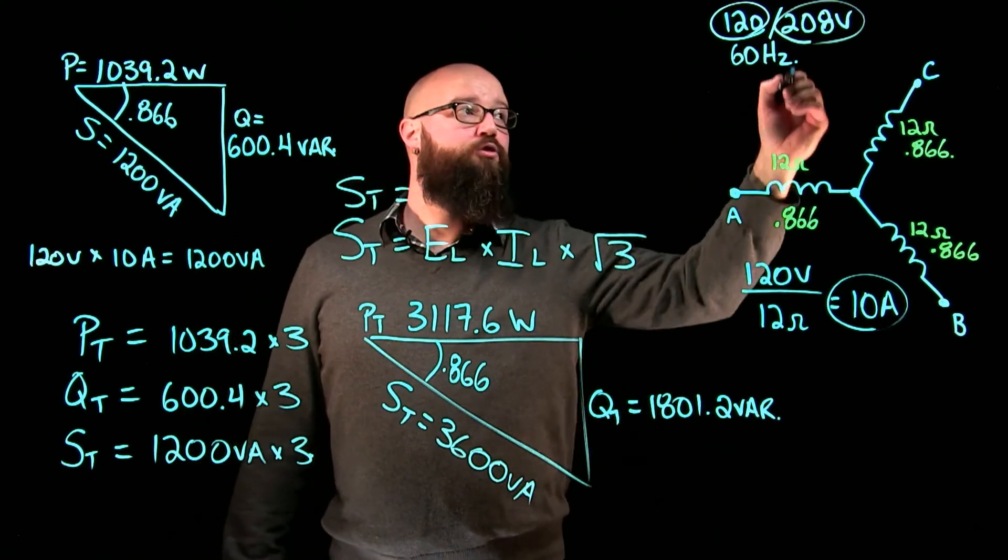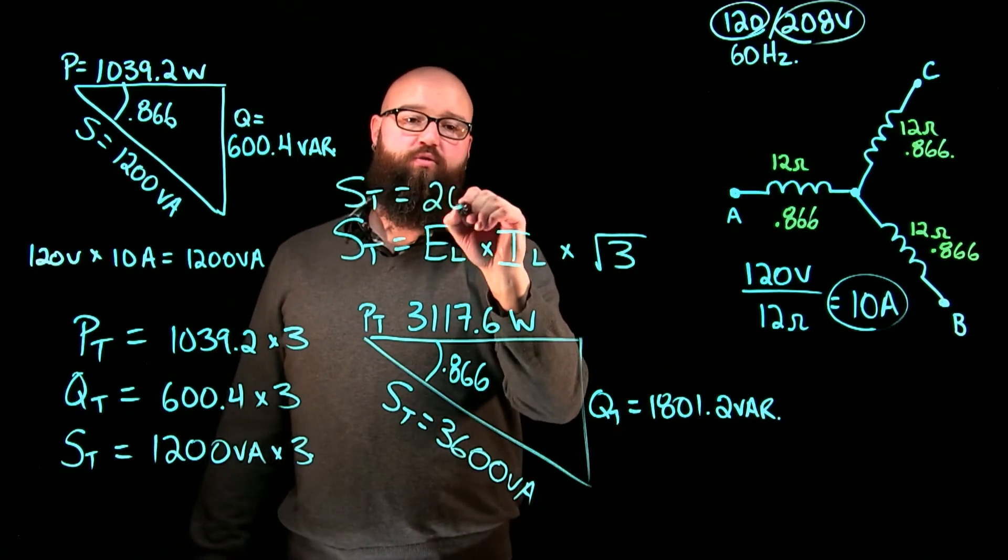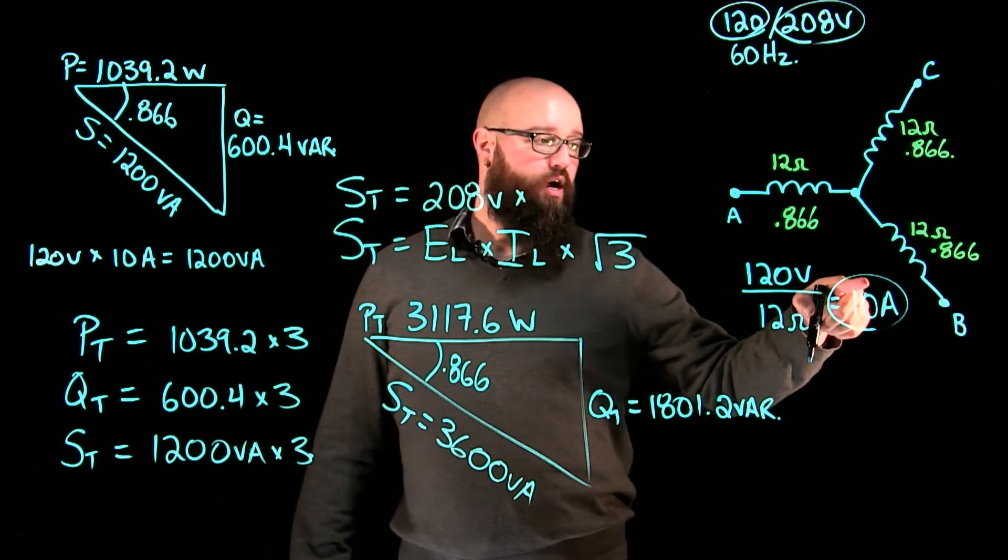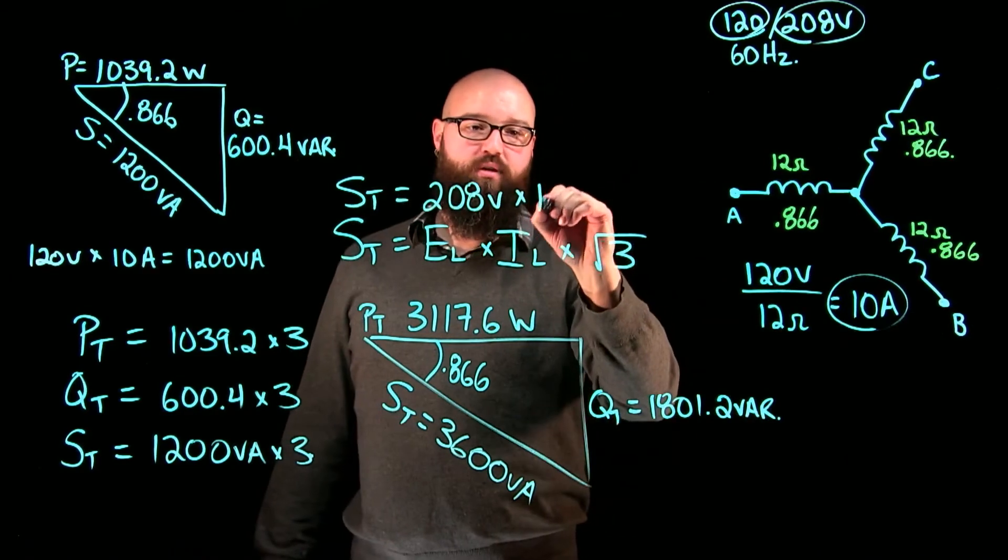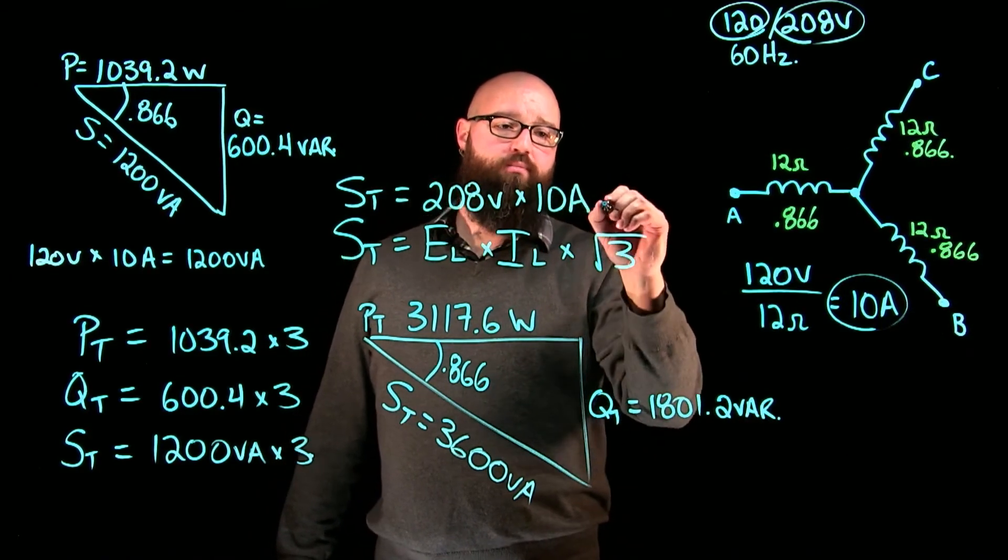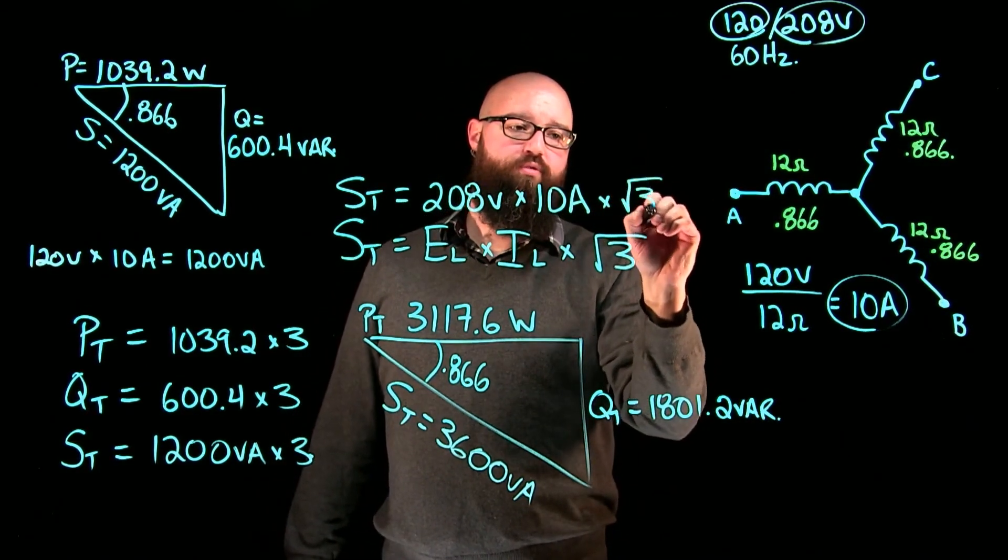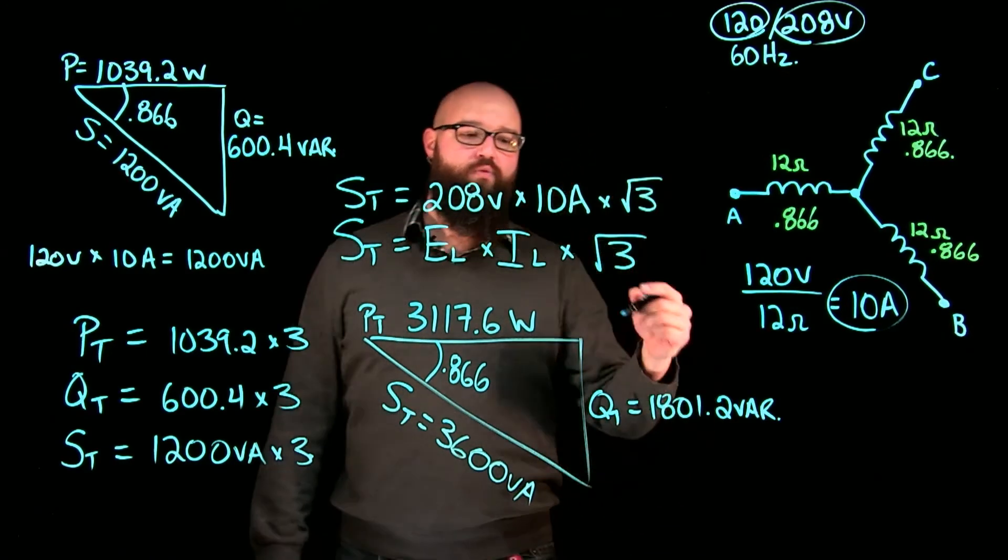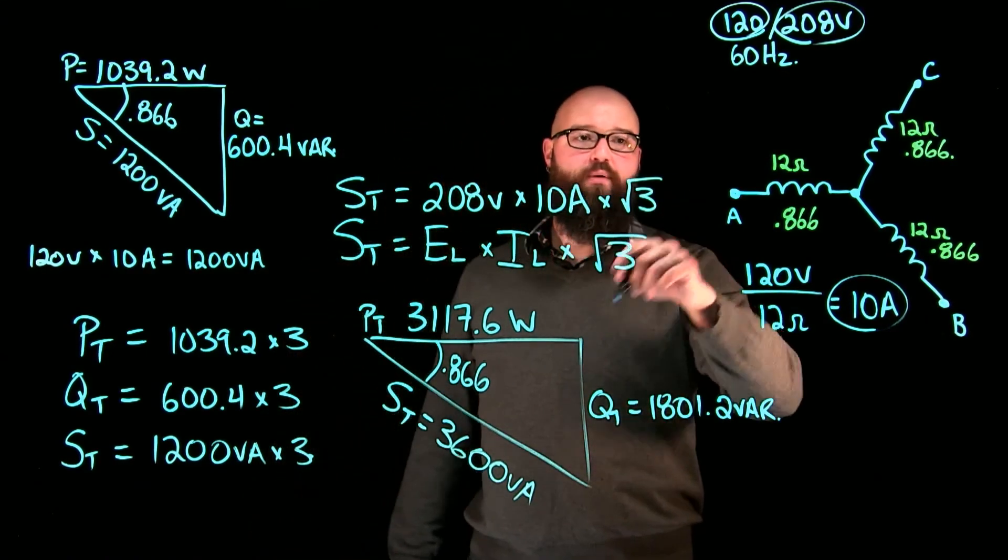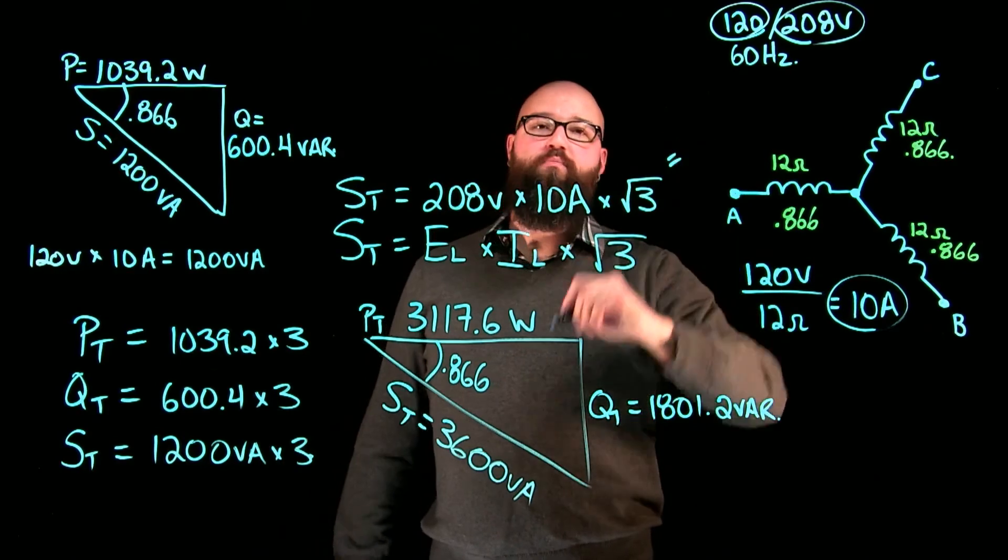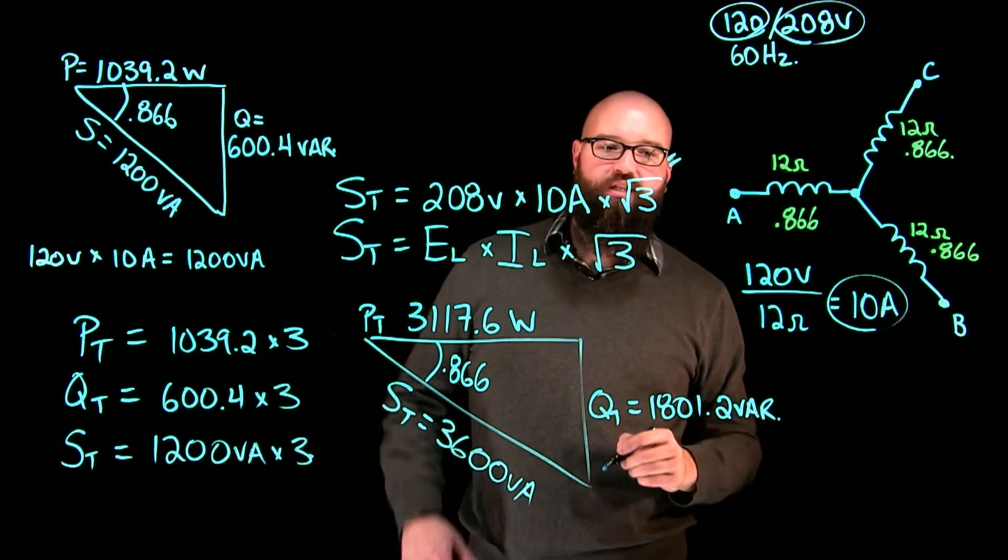We know that E line is 208 volts, so 208 volts times I line of 10 amps times root 3 should work out running these numbers to give you pretty close to the same number. I think in this case it works out to about 3,602 VA.